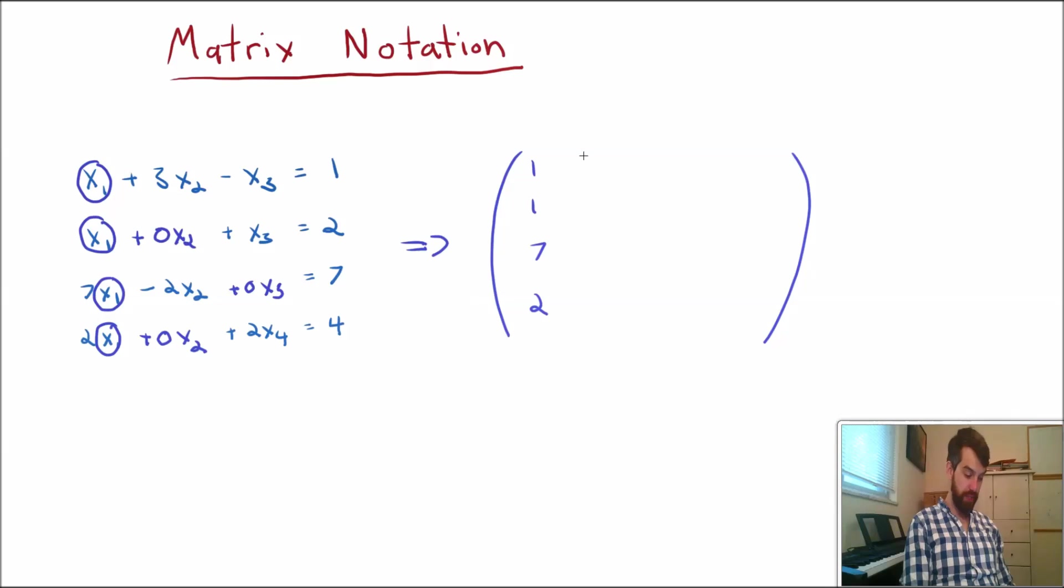In the second column, it's a 3 times an x2. I had already filled it in, so this is a 0 times an x2, a minus 2 times an x2, and a 0, a minus 1, a 1, a 0, and a 2.